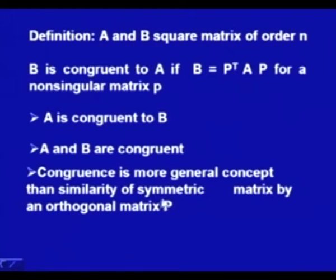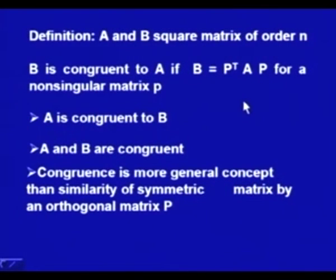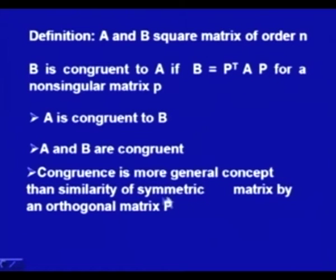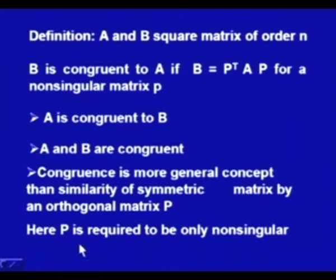We define that if A and B are square matrices of order n, then B is congruent to A provided B = PᵀAP for a given non-singular matrix P. The two matrices A and B are congruent if they are related by this expression. Congruence is a more general concept than similarity of symmetric matrices by an orthogonal matrix P. For similar matrices, B = P⁻¹AP. When P is orthogonal, P⁻¹ = Pᵀ, so similarity and congruence coincide. But congruence only requires P to be non-singular.